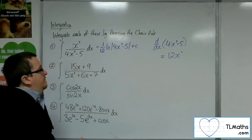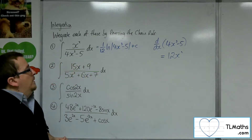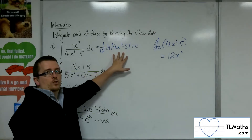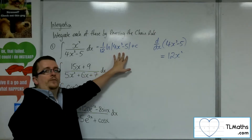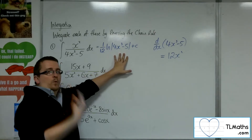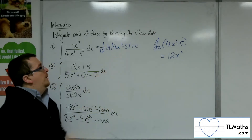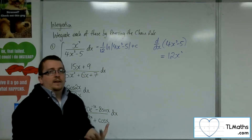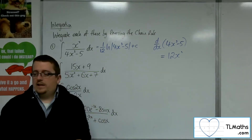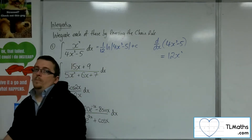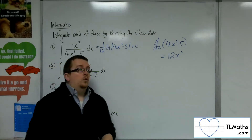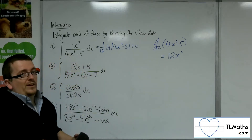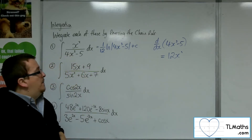And so this would be 1 twelfth log of 4x cubed minus 5, plus C. We're putting modulus signs around the logarithm because we want to make sure that if we were to use it as a definite integral, any value that I plug in will be positive — because I can't take the log of a negative number.